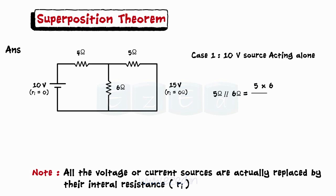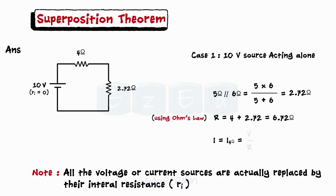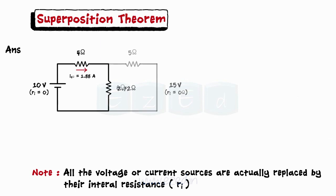Replacing them by their equivalent resistor, we get two resistors in series as shown. The total current is calculated using Ohm's law as I equals V upon R, giving I equals 1.488 Amperes. This current flows through the 4 Ohms resistor.